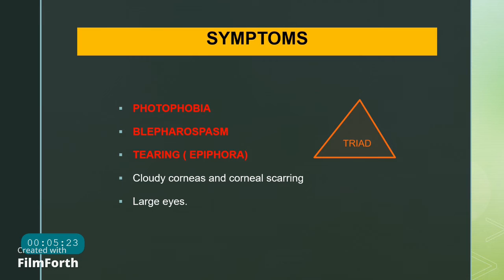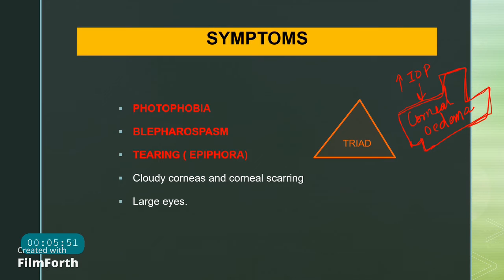The symptoms of primary congenital glaucoma arise mainly from raised IOP causing corneal edema. The classic triad consists of photophobia (discomfort with light), blepharospasm (spasm of the orbicularis muscle), and epiphora (excessive tearing). These three signs form the classic triad of childhood glaucoma.